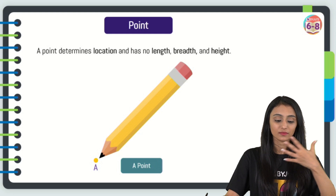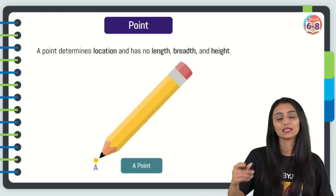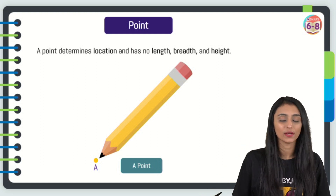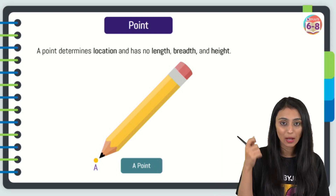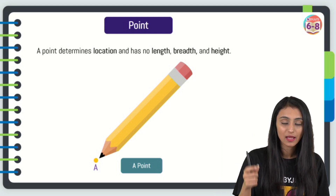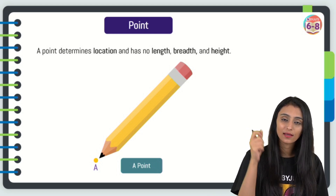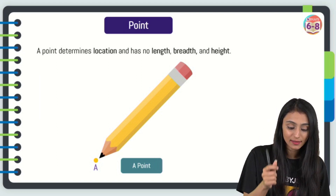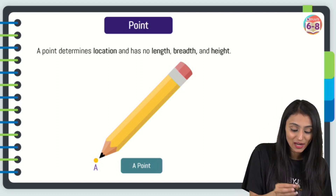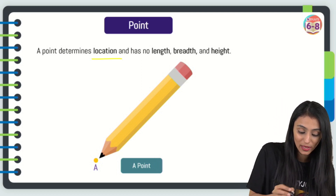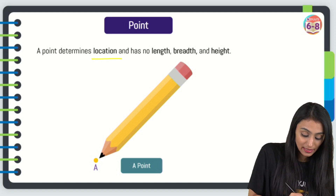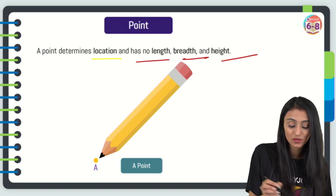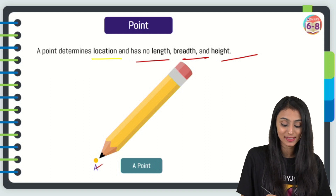Let's start with the basic building block of geometry: what is a point? If you take a sharpened pencil, the sharper the pencil, the thinner the dot. A point is basically a dot which determines the location. It has no dimensions — no length, no breadth, no height. That's what a point is.